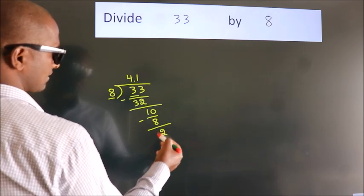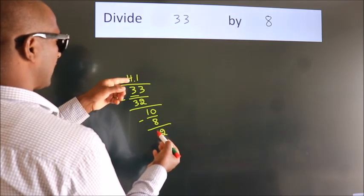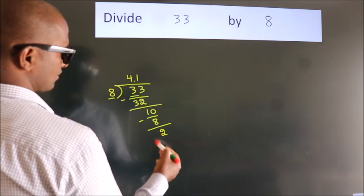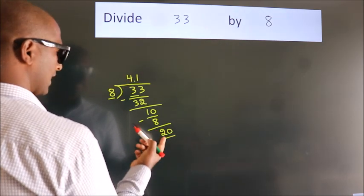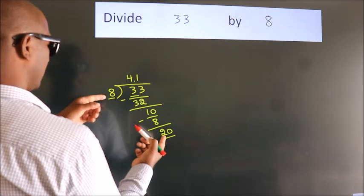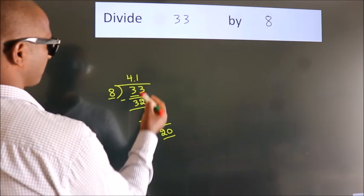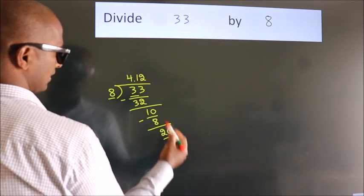After this, we already have the decimal, so directly take 0. So, 20. A number close to 20 in the 8 table is 8 twos 16.